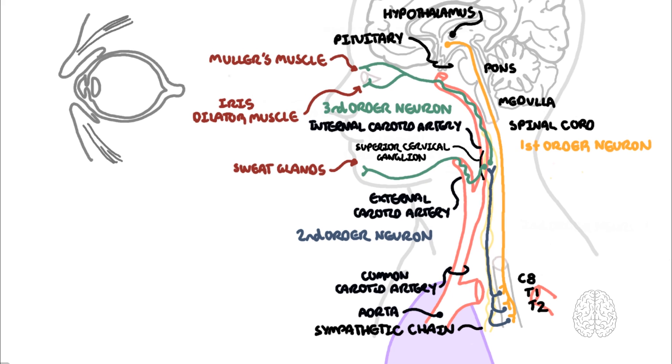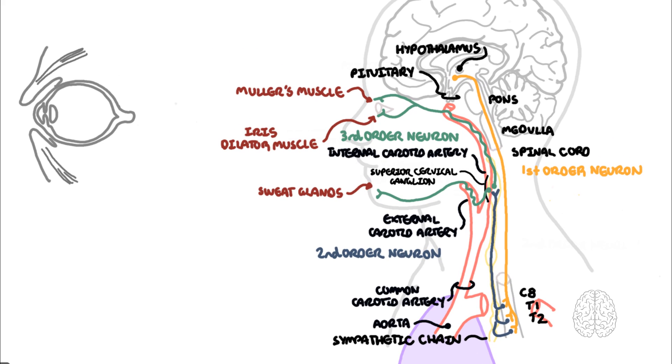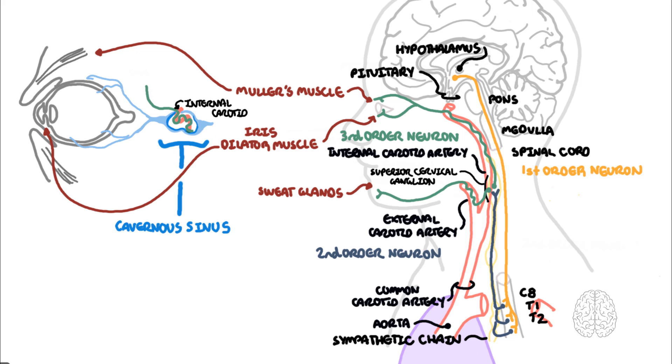Let's focus now on the third-order neuron, also called the oculosympathetic neuron. Remember this neuron ascends along the internal carotid artery through the cavernous sinus, which is a venous plexus which drains blood from the eye. The third-order neuron nerve fibers, the oculosympathetic fibers, innervate muller's muscle, which is a small smooth muscle in the eyelid responsible for a minor portion of upper eyelid elevation.